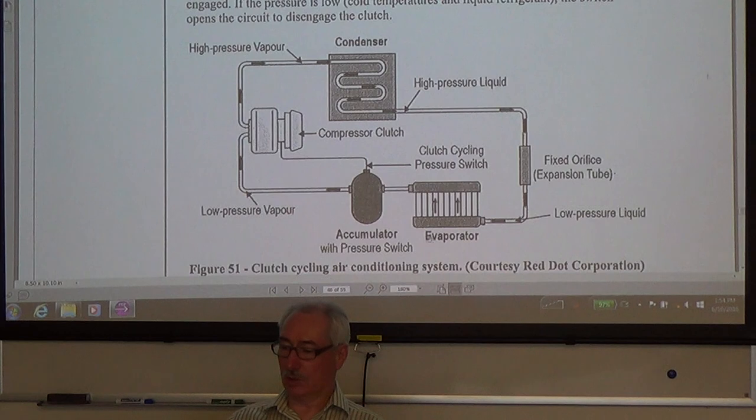So here's our CCOT system. We've got our accumulator with a pressure switch. We've still got the same condenser. Now instead of the receiver dryer over here with the expansion valve, we've got a fixed orifice expansion tube. So you may not even see this anywhere. There could be some fittings there where you can open up the lines and get at that expansion tube. Here's the evaporator. And then after the evaporator, we have the accumulator with a pressure switch on it going to our clutch. The line continues to the suction side of the compressor.